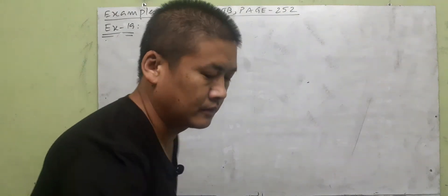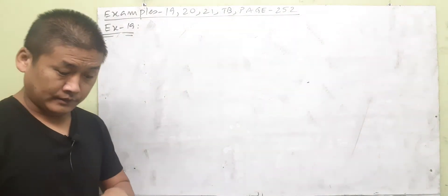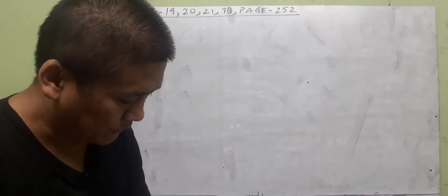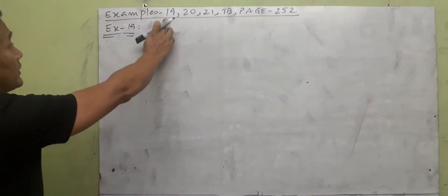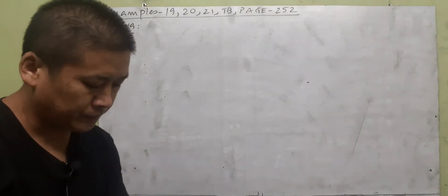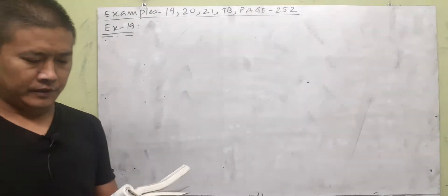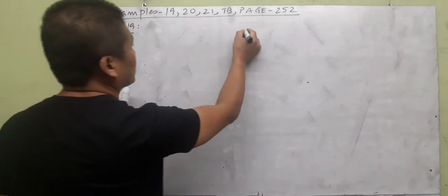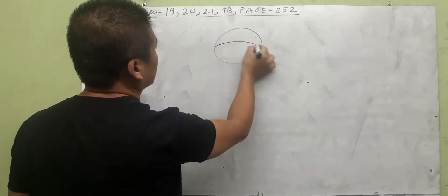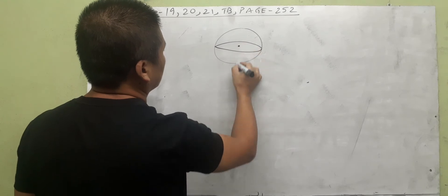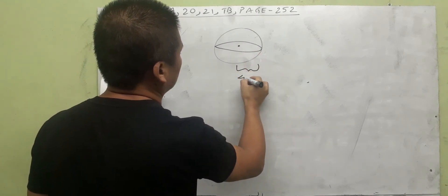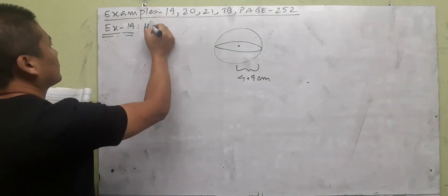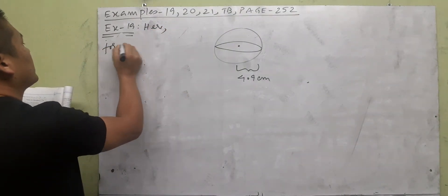This is the last class for exercise 13.8, page 252. Let's start with example 19. The question states: a short put is a metallic sphere of radius 4.9 centimeters. Let us draw that — the shot put is spherical with radius 4.9 centimeters.